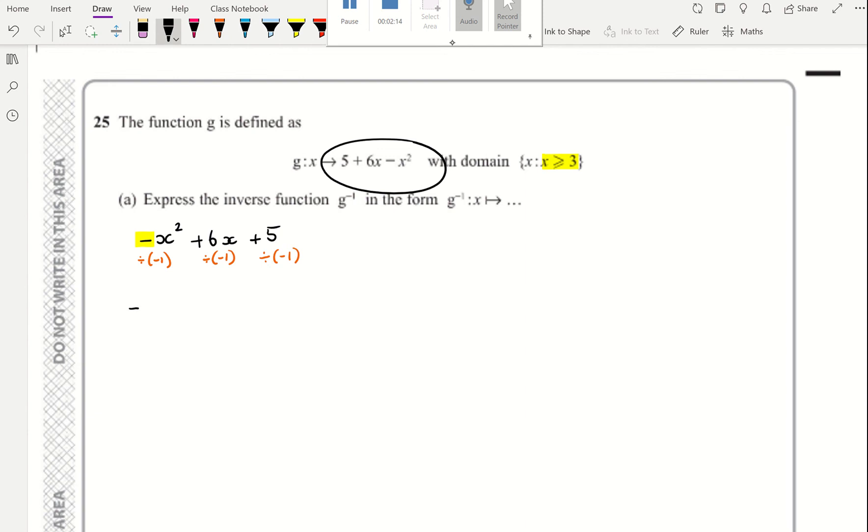Here it is, negative 1 is out. I now have, you can put negative 1 if you want or you can just put a minus. So x squared minus 6x minus 5. Now I can complete the square.